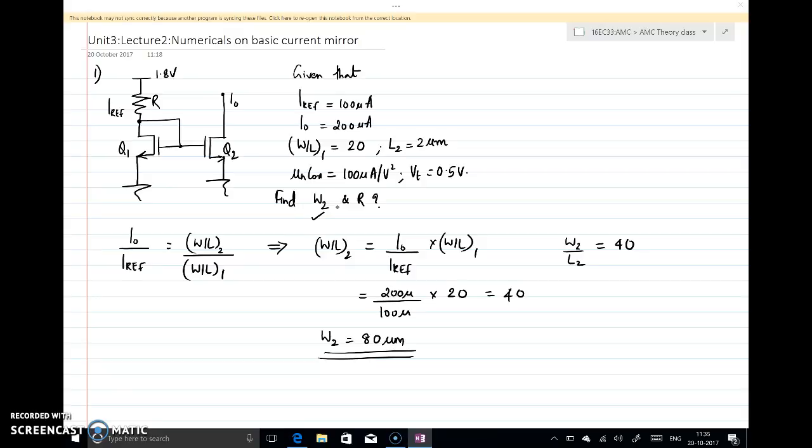Now w2 is known. One more thing is given - the value of resistance R. How to find the value of resistance R? If you look at the circuit diagram, R is equal to Vrad which is 1.8 minus this voltage (this voltage is same as the Vgs voltage here) - 1.8 minus Vgs divided by Iref. In this, Vgs is actually unknown. How to find Vgs?